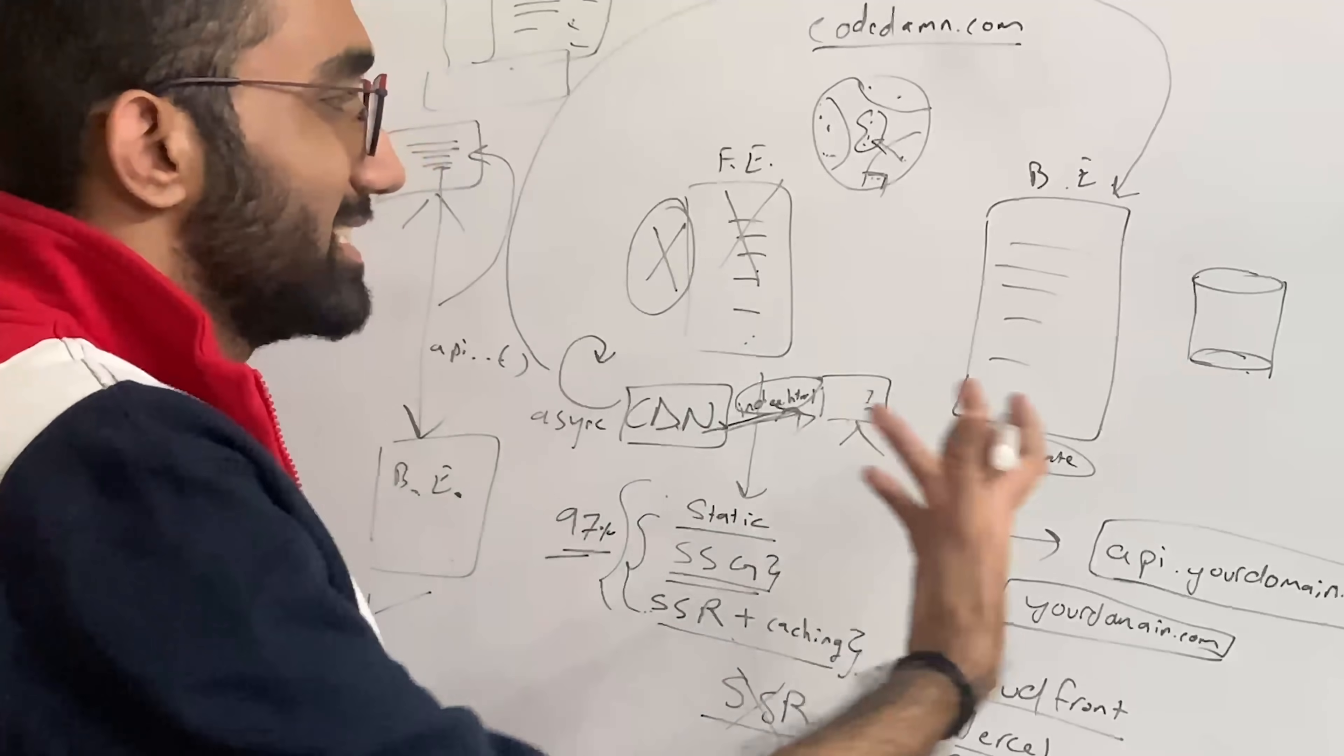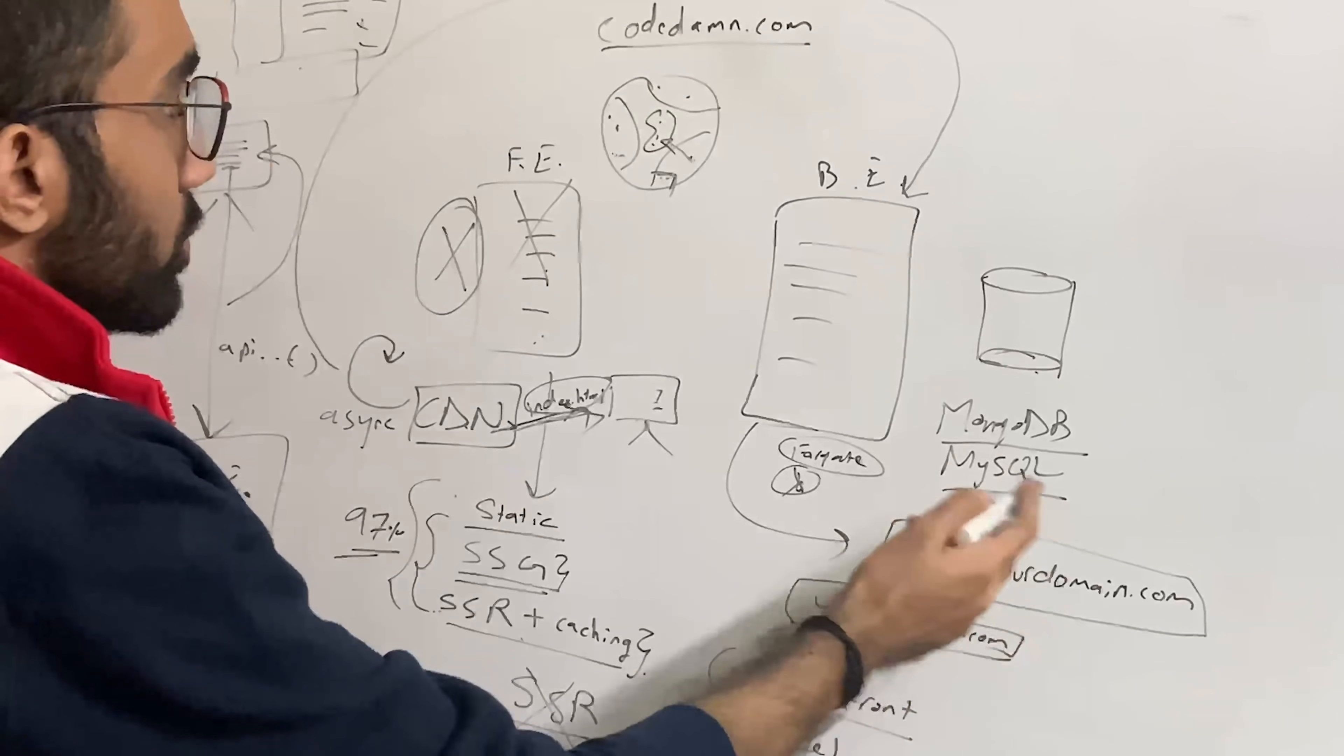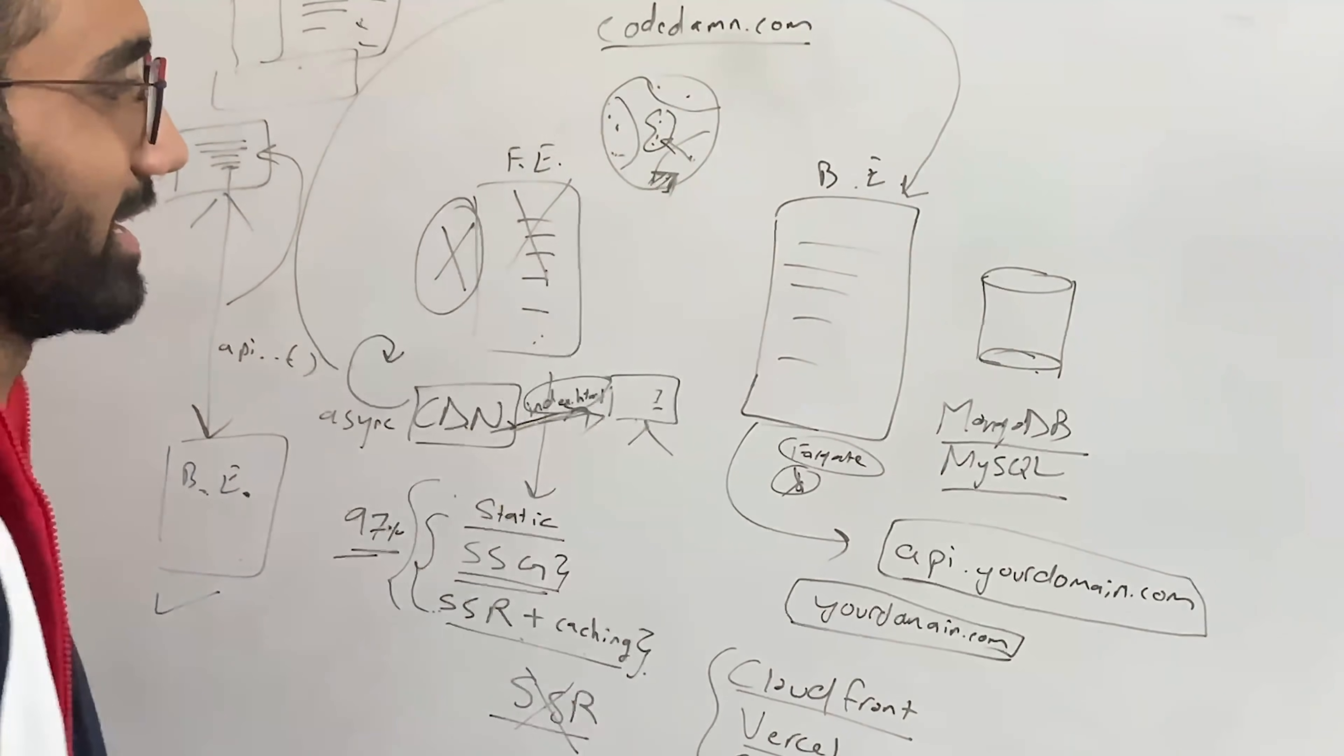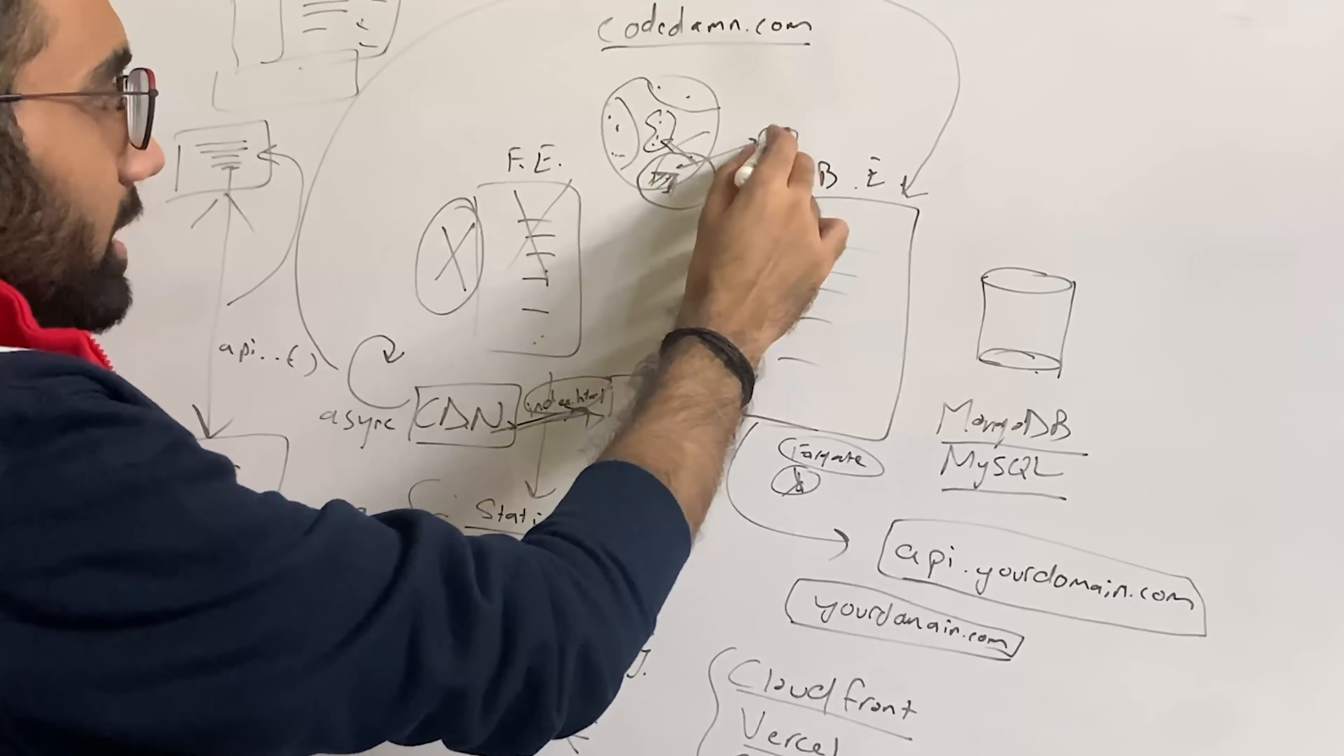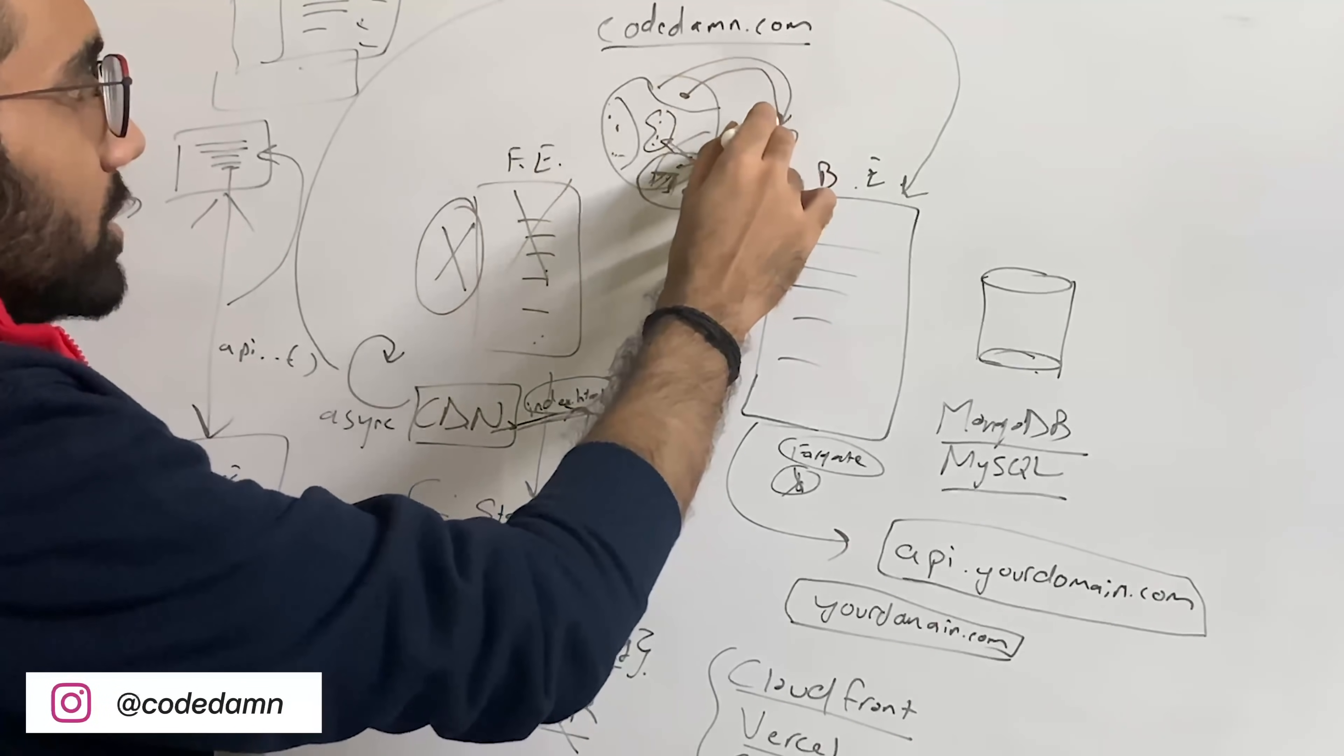Because still most companies do prefer the standard MongoDB or MySQL or Postgres, which are usually - I mean until you are using some new managed service from a cloud provider - which are usually restricted to a single availability zone or a single region. So you anyway have to have a VPC in that region where let's say your lambda is running which communicates with that, and you have to call that lambda from pretty much everywhere across the world.